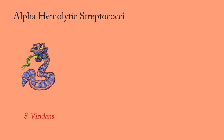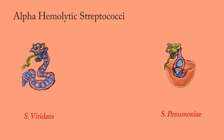Streptococcus pneumoniae lives in short chains or pairs. We will treat it as a cute baby snake. The baby snake is made up of spheres that look like the tip of a lance. Due to its tendency to live in pairs, it is called diplococcus, where 'di' means two. This pathogen is also called pneumococcus. The purple color is due to the gram-positive stain.